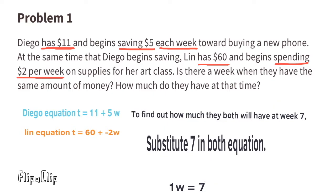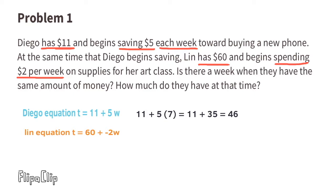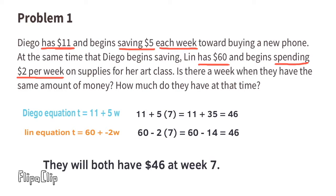To find out how much they both will have at week 7, substitute w with 7. Now Diego's equation reads 11 plus 35 equals 46. And Lynn's equation reads 60 minus 14 equals 46. They both will have $46 at week 7.